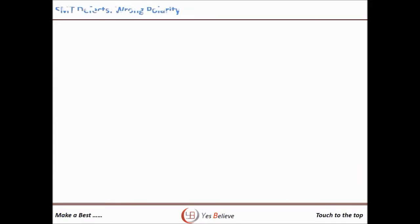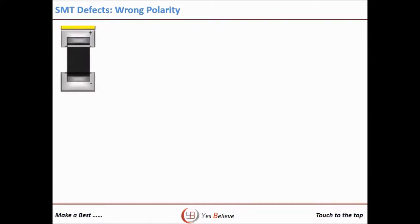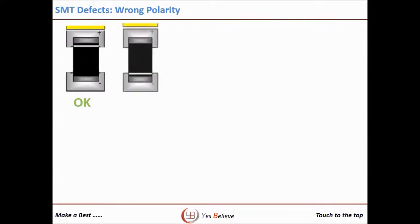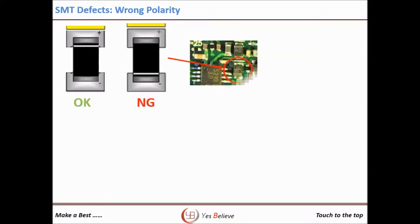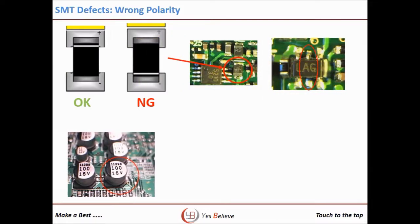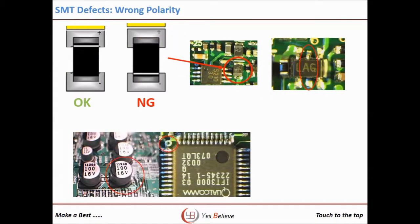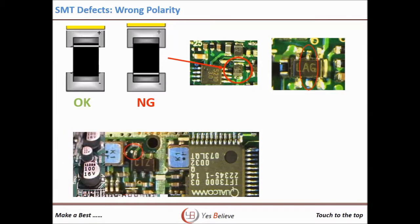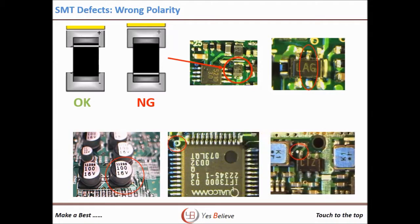Similar to wrong component, wrong polarity is also a serious defect in SMT. This can occur due to wrong selection of component rotation in the program, or due to manual mounting before reflow. When changing to a different component reel whose original direction is different, this defect can also occur.